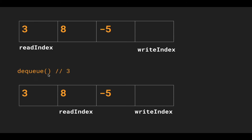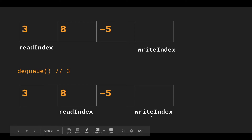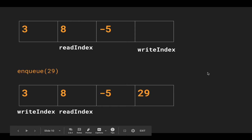Now we're going to dequeue the first element that read index is pointing to. We look at read index, return the value of 3, and then advance the read index. We don't have to set the 3 to null or any falsy value, because it will eventually be overwritten by the write index.